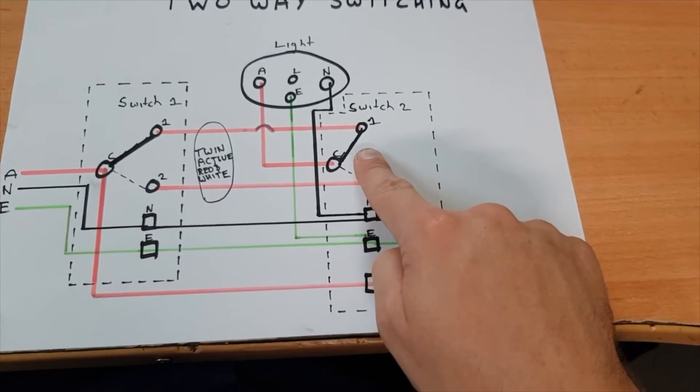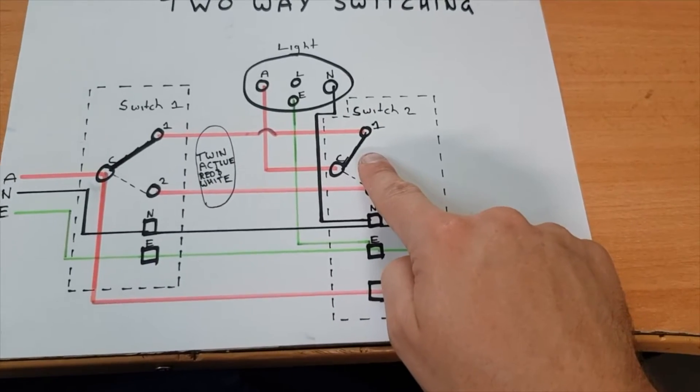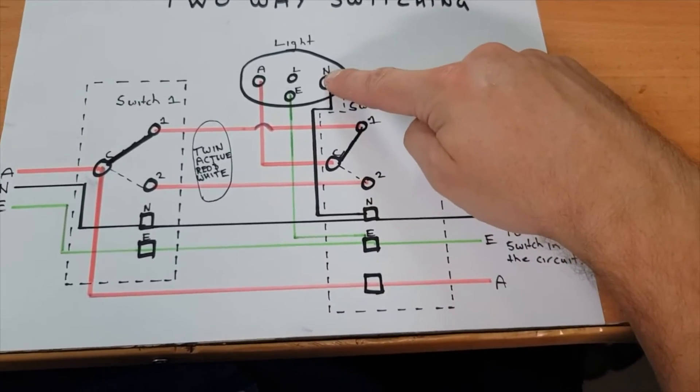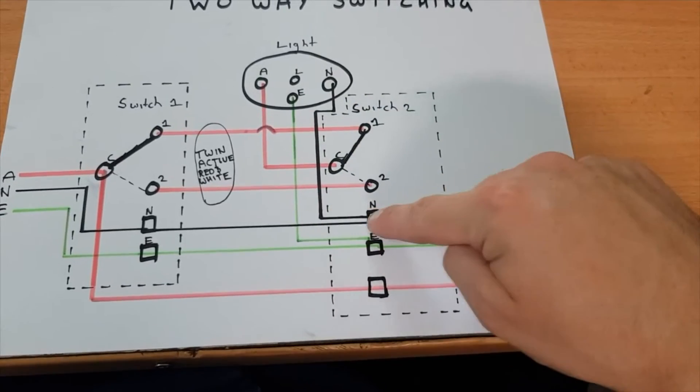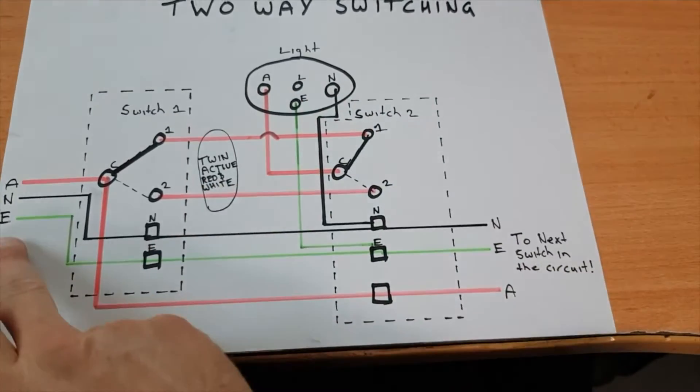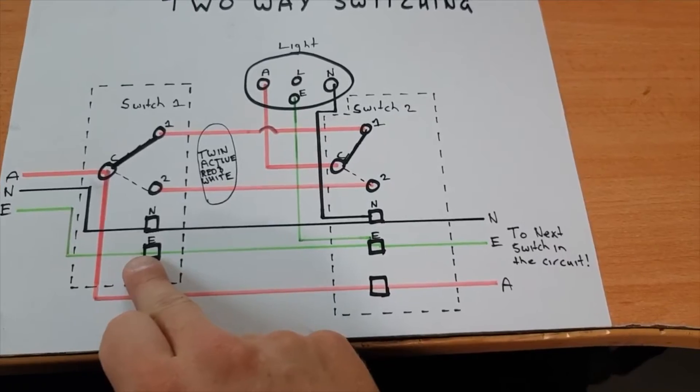The return path for the power from the light is just your neutral, which is here. Your earth just goes through and loops at your switches here. These are just connectors and it goes up to your light and also continues on to your next switch.